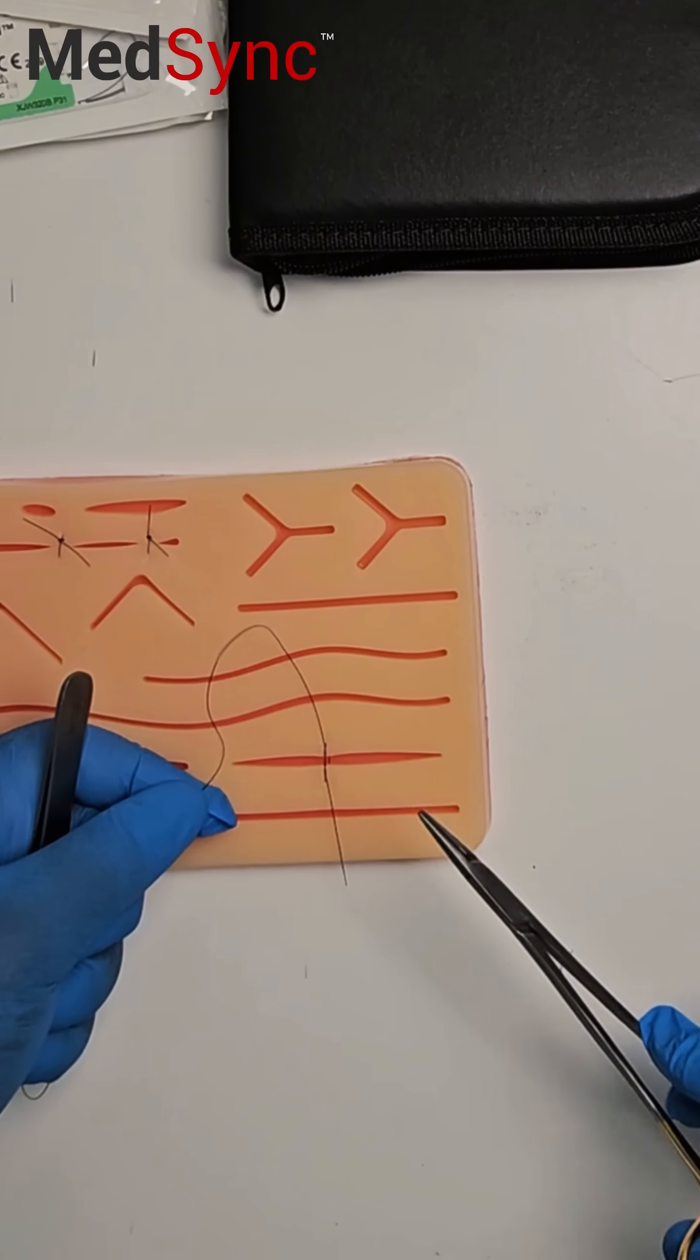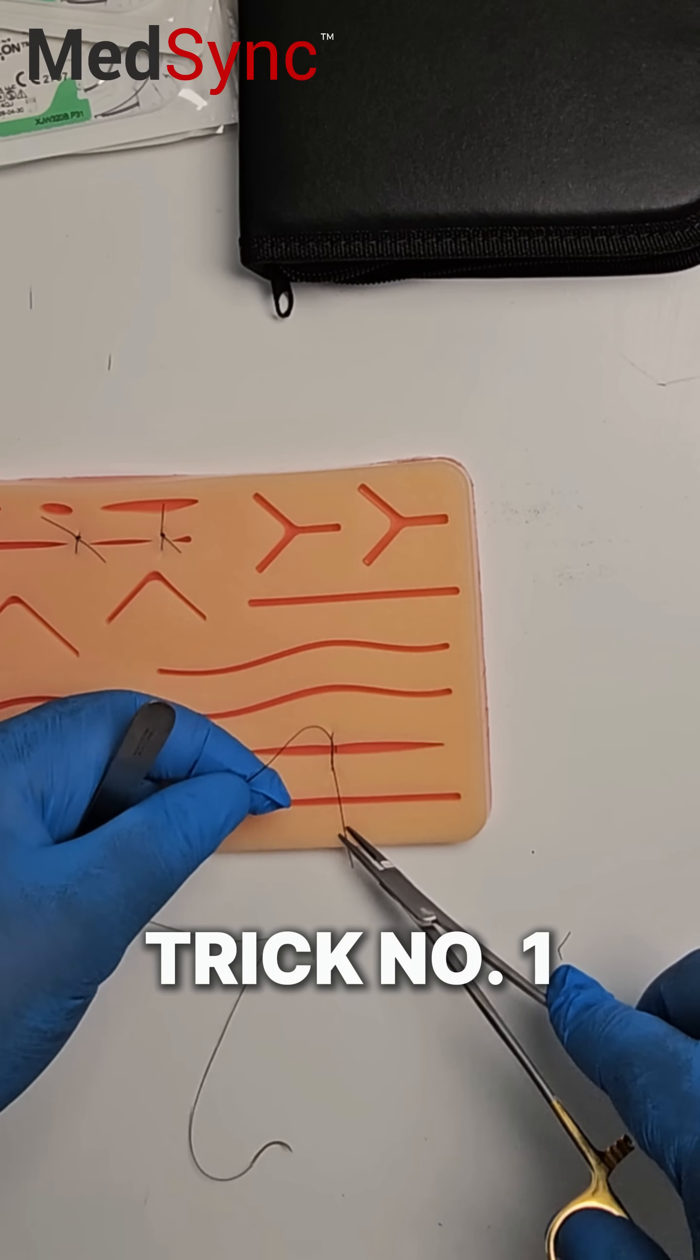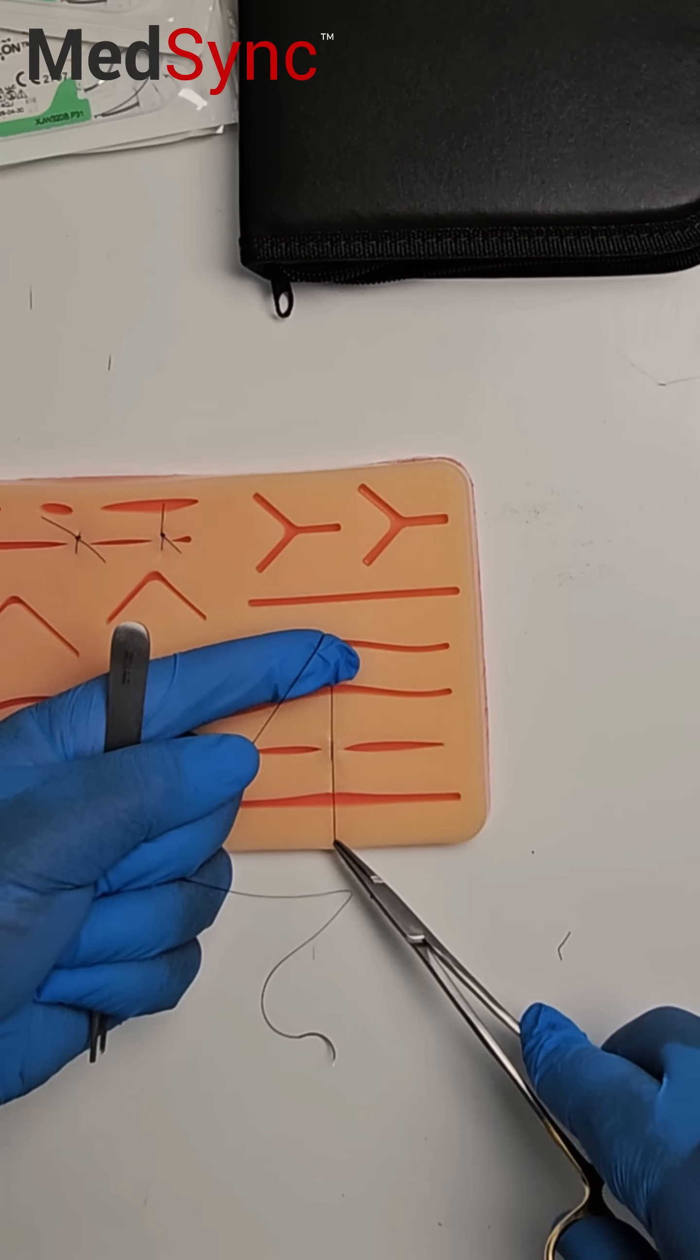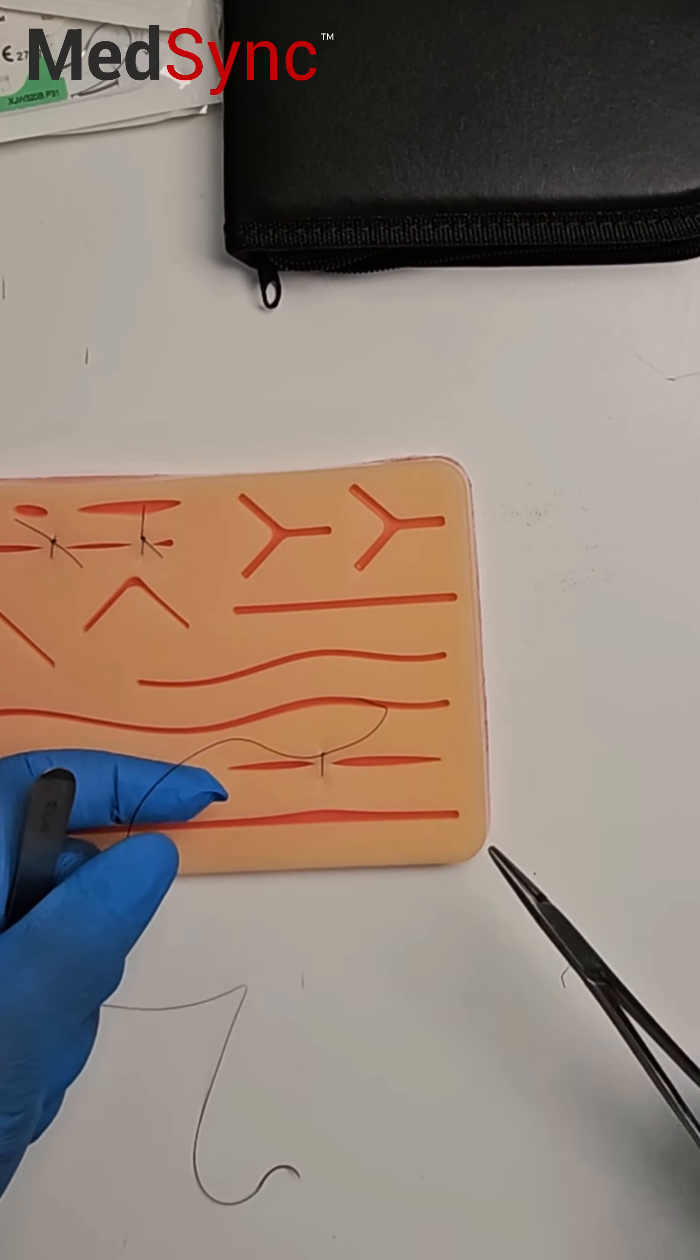You can undo it, that's a waste of time, or you can do trick number one. Tighten it, slide the knot to one side and it holds.